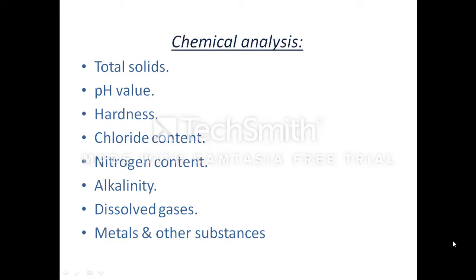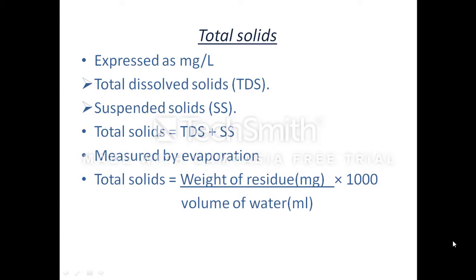In this lecture, we will study about total solids. The total solids in water can be total dissolved solids and suspended solids. Total dissolved solids are those solids dissolved in water, while suspended solids are present as suspended matter. Total solids equals total dissolved solids plus suspended solids. To measure total solids in water, a known volume of water is evaporated in an oven at 105°C and the dry residue left is weighed. Total solids in mg/L or ppm equals weight of residue in mg divided by volume of water in mL, multiplied by 1000.